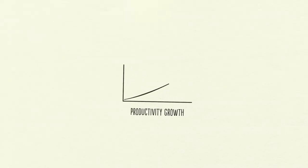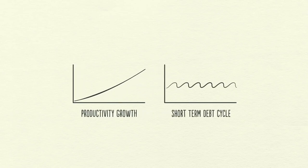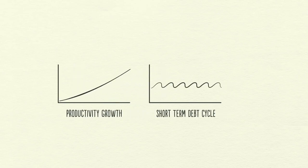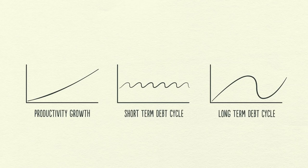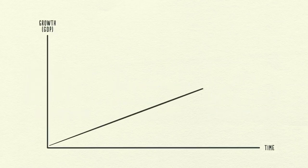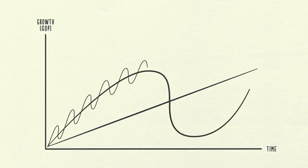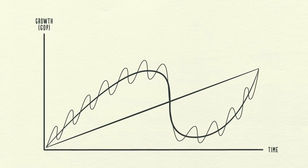Number one, productivity growth. Number two, the short-term debt cycle. And number three, the long-term debt cycle. We'll look at these three forces and how laying them on top of each other creates a good template for tracking economic movements and figuring out what's happening now. Let's start with the simplest part of the economy, transactions.